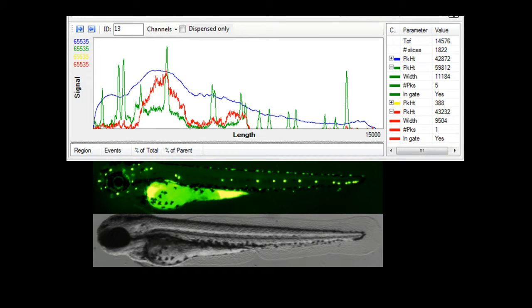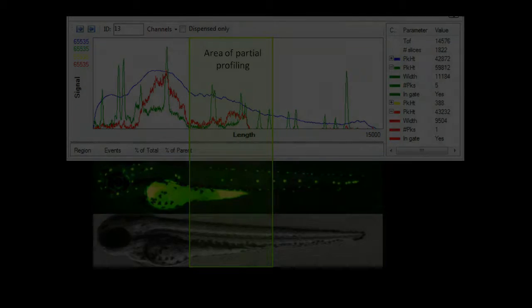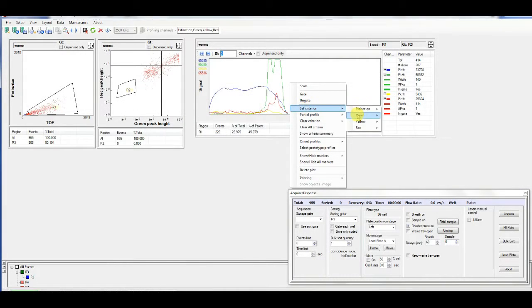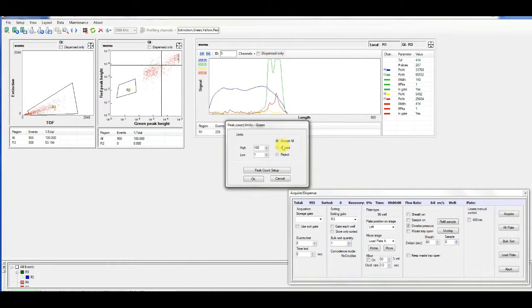Activation of partial profiling applies the profiling analysis tools to a subsection of the object. Partial profiling can be configured to analyze features exclusive to the object's head, tail, middle, or end regions. And of course, any or all of profiling criteria can be used as sort criteria.